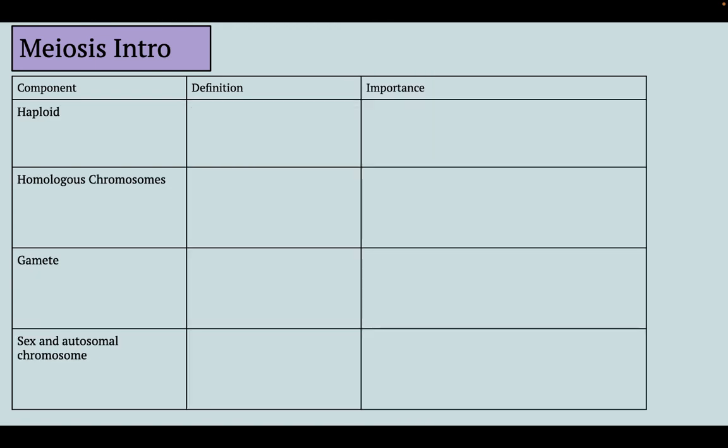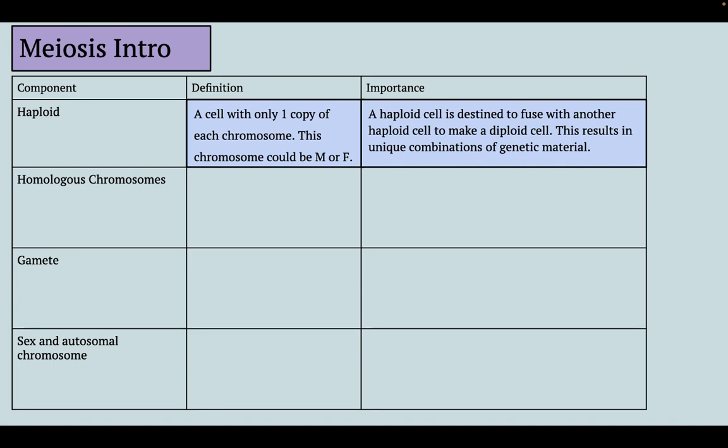Some other key vocabulary words: haploid is a cell that has one copy of each chromosome. It could be maternal or paternal, but not both. A haploid cell within humans is destined to fuse with another haploid cell to make a diploid cell, and the result is going to be a unique combination of genetic material. Haploid cells in humans are sperm and eggs.